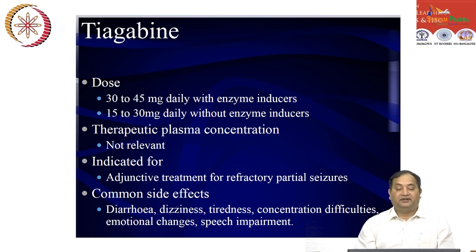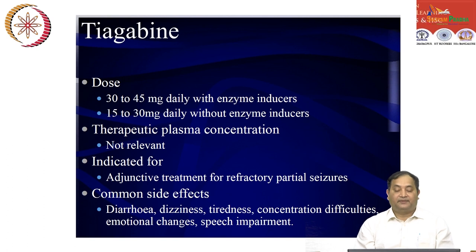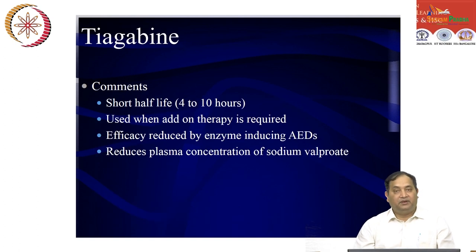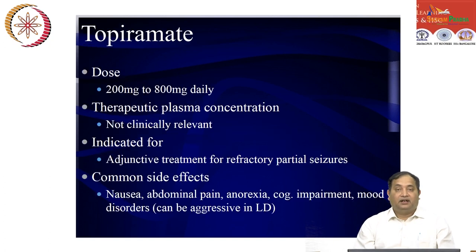Tiagabine is dosed at 30 to 45 mg; with enzyme inducers, use 15 to 30 mg. TDM is not clinically relevant. It is used as adjunct therapy for refractory partial seizures. Common side effects include diarrhea, dizziness, tiredness, concentration difficulties, behavioral and emotional changes, and speech effects. It has a very short half-life. Its efficacy is reduced when used with enzyme-inducing anti-epileptic drugs.